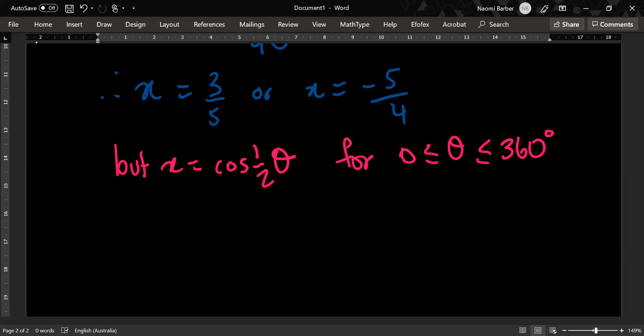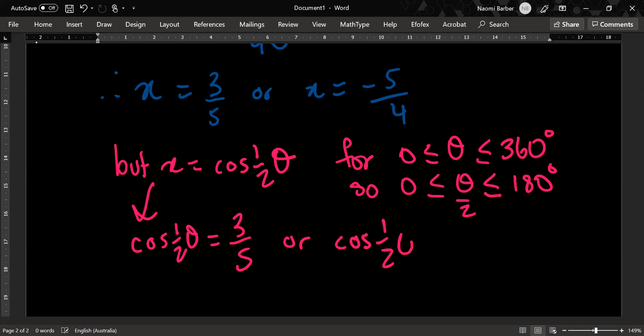So because we're working with half theta instead of regular theta, we need to change the domain. So we divide everything by 2. So the domain for theta on 2 is between 0 and 180. So therefore, x equals cos half theta. Therefore, cos half theta equals 3 over 5 or cos half theta equals minus 5 over 4.